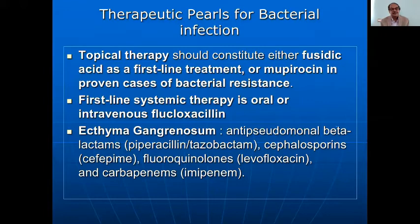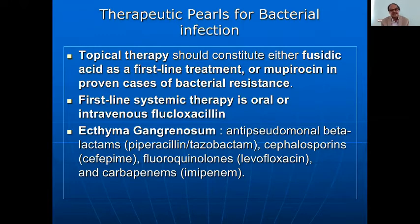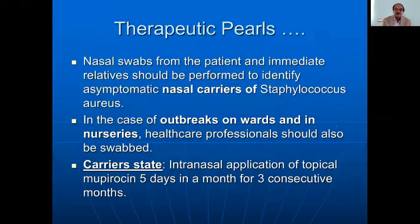For bacterial infections, topical therapy should be fusidic acid or mupirocin as first-line. First-line systemic therapy is oral or intravenous cloxacillin. For ecthyma gangrenosum, anti-pseudomonal agents — beta-lactams, cephalosporins, fluoroquinolones, and carbapenems — can be used.